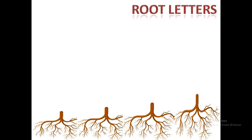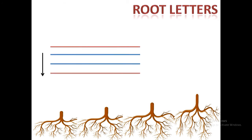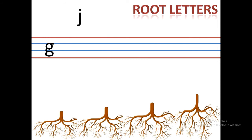Next are root letters. Let's see the place and position of root letters. They are written in the bottom three lines, which means they include the two middle lines and the bottom red line. They begin at the first blue line and end on the bottom red line. The root letters are G, J, P, Q, and Y. All these letters begin at the first blue line and end at the bottom red line. These letters don't touch the top red line.